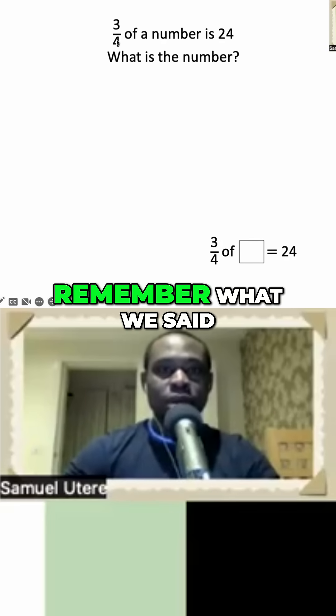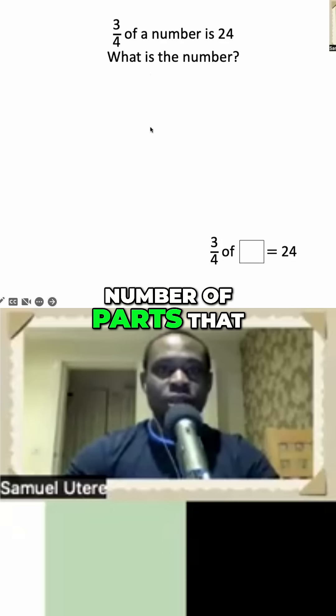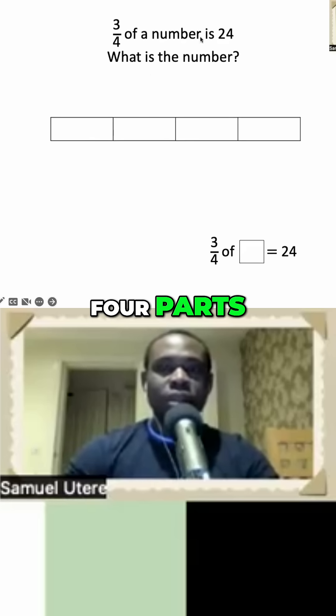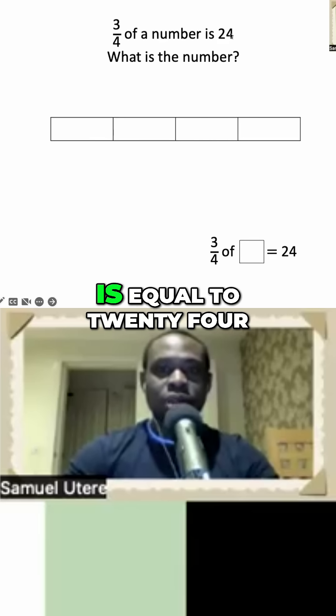So remember what we said, the denominator represents the number of parts that you're going to split things into. So we need a bar model that has four parts. This question is telling us that three lots of this bar model is equal to 24.